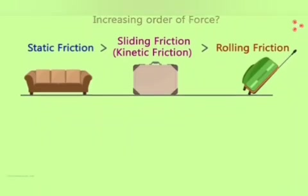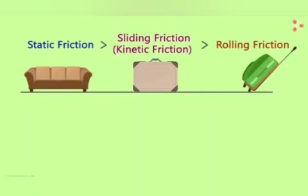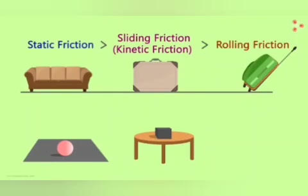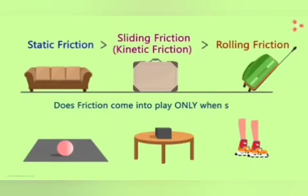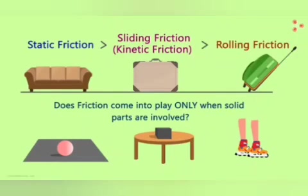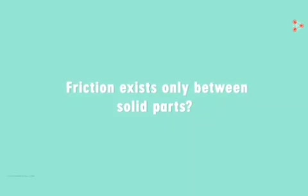In all the examples so far, we've only considered friction between solid parts — a ball on a floor, a box on a table, or roller skates on the ground. In all cases, both objects were solid. Does friction come into play only when solid parts are involved? Is there any other kind of friction we haven't seen yet?